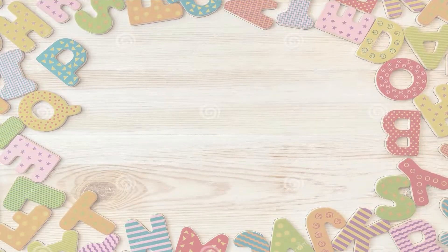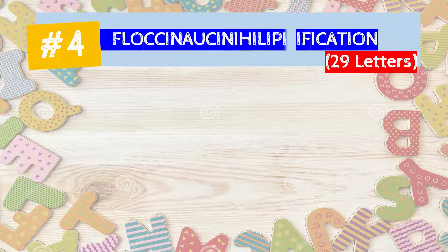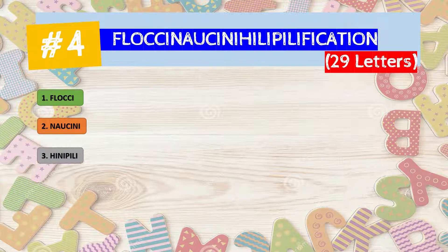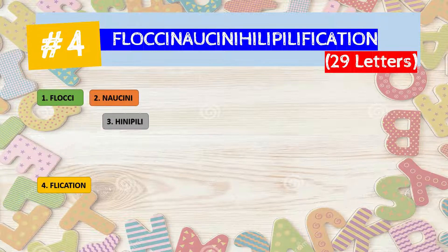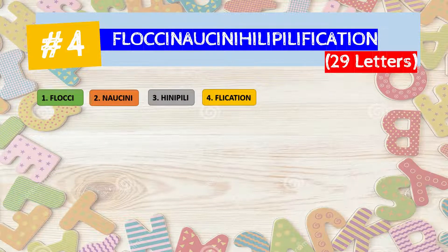Now let's come to number four. It is a 29-letter word called 'floccinaucinihilipilification.' It is easy to pronounce if we break it in four parts: flocci — nauci — nihili — pilification. Once again: flocci — nauci — nihili — pilification.